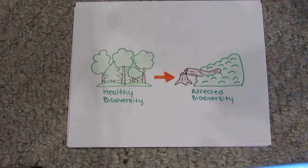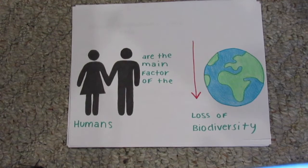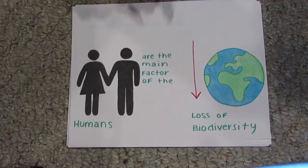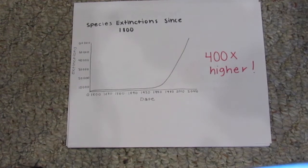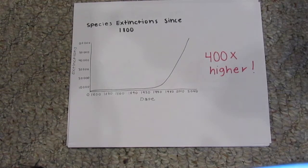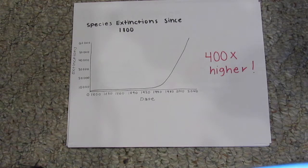Now we're going to tell you how humans are affecting biodiversity. Humans are the main factor in the loss of biodiversity. Did you know that right now the extinction rate is 400 times higher than the normal average rate? Much of this increase in extinction rate is from the impact of humans.